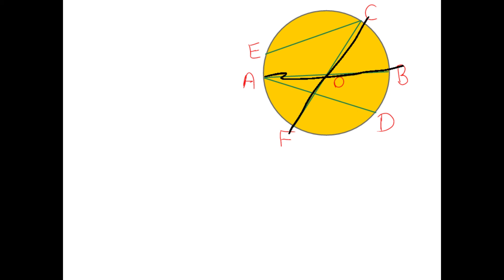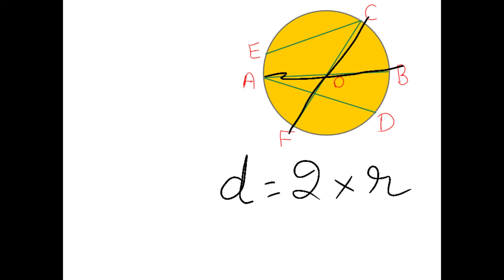The diameter always comes as the middle line. The diameter segment always comes as the middle line and it is drawn fully. The diameter formula is twice the radius. Radius starts from the center of a circle to a point on the circle. This diameter is the biggest chord on a circle — it starts from one end to the other end and passes through the center of the circle.